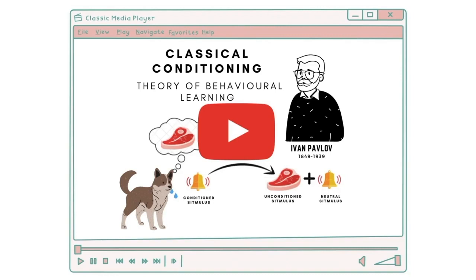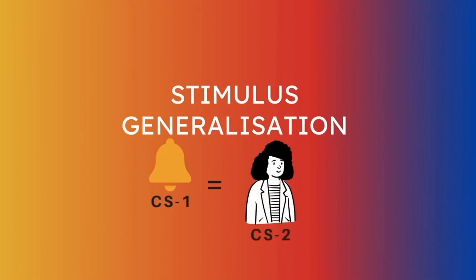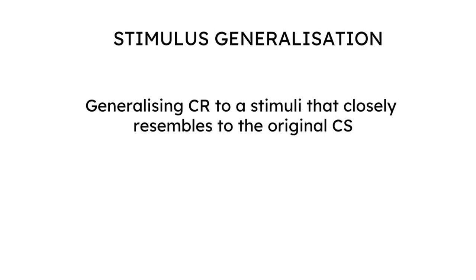Right, so having said that, let's move on to looking at what we cover for today's video. In stimulus generalization, as the name suggests, the animal learns to generalize their conditioned responses across different stimuli which closely resemble the original conditioned stimulus, but is not the original conditioned stimulus.